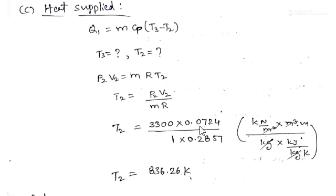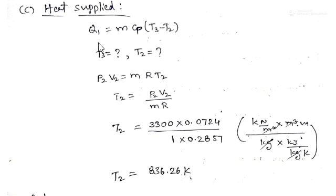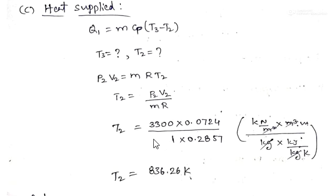For the third part, we calculate heat supplied. Heat is supplied in process 2 to 3, which is a constant pressure process. The formula is: heat supplied = mCp(T3 minus T2). We need T2 and T3. To find T2, we use PV = mRT at point 2: T2 = P2 V2 by mR.